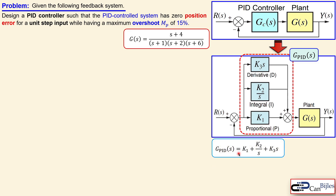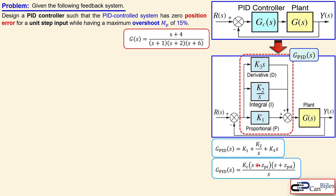The PID controller can be written as the summation K1 plus K2 over S plus K3 times S. You can also write this in a format with the controller gain KC times two zero locations divided by the pole at the origin. This is the generic expression for the PID controller. We need to determine KC, ZPI, and ZPD — two zeros and one gain parameter.